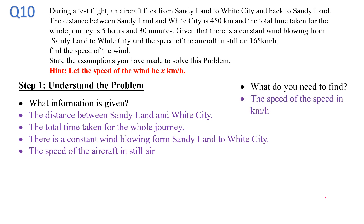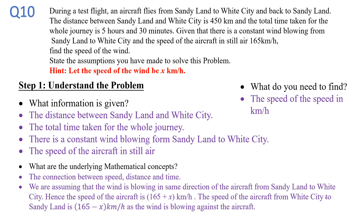And what is it that we need to find? We need to find the speed of the wind in km per hour. So therefore since this is something that we need to find, we let the speed of the wind be x km per hour. The underlying mathematical concepts would be the connection between speed, distance and time. Also because there is a constant wind blowing, we have to assume that this constant wind is in the same direction of the aircraft from Sandy Land to White City.